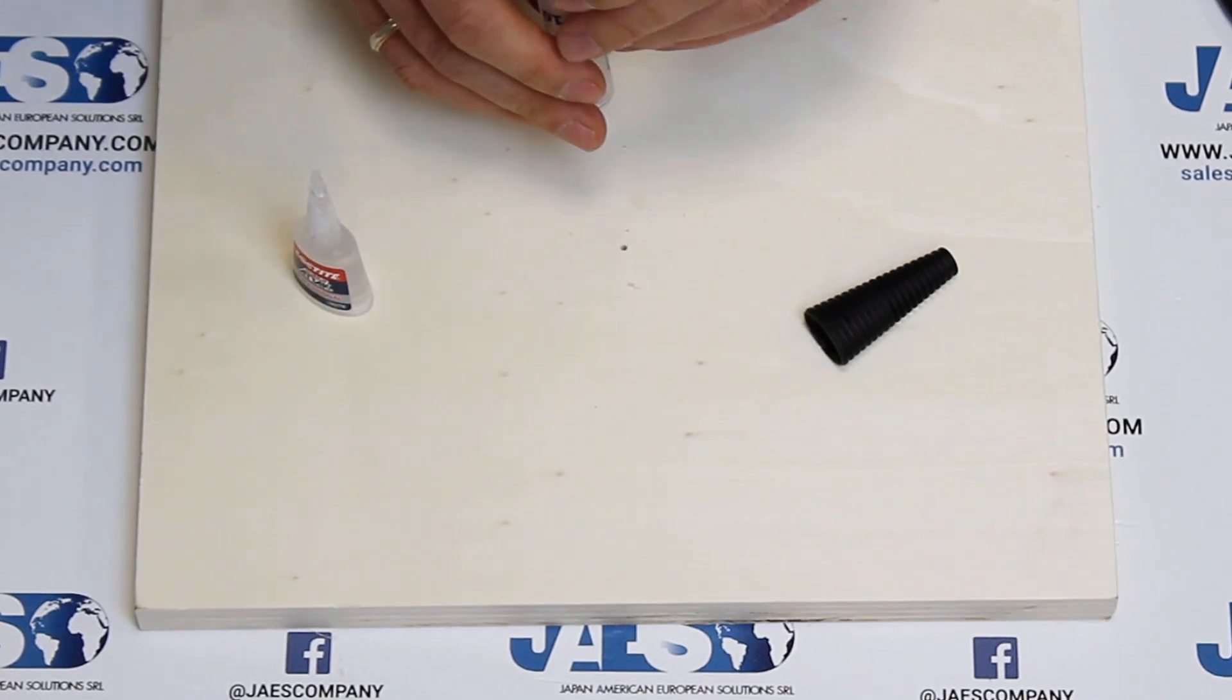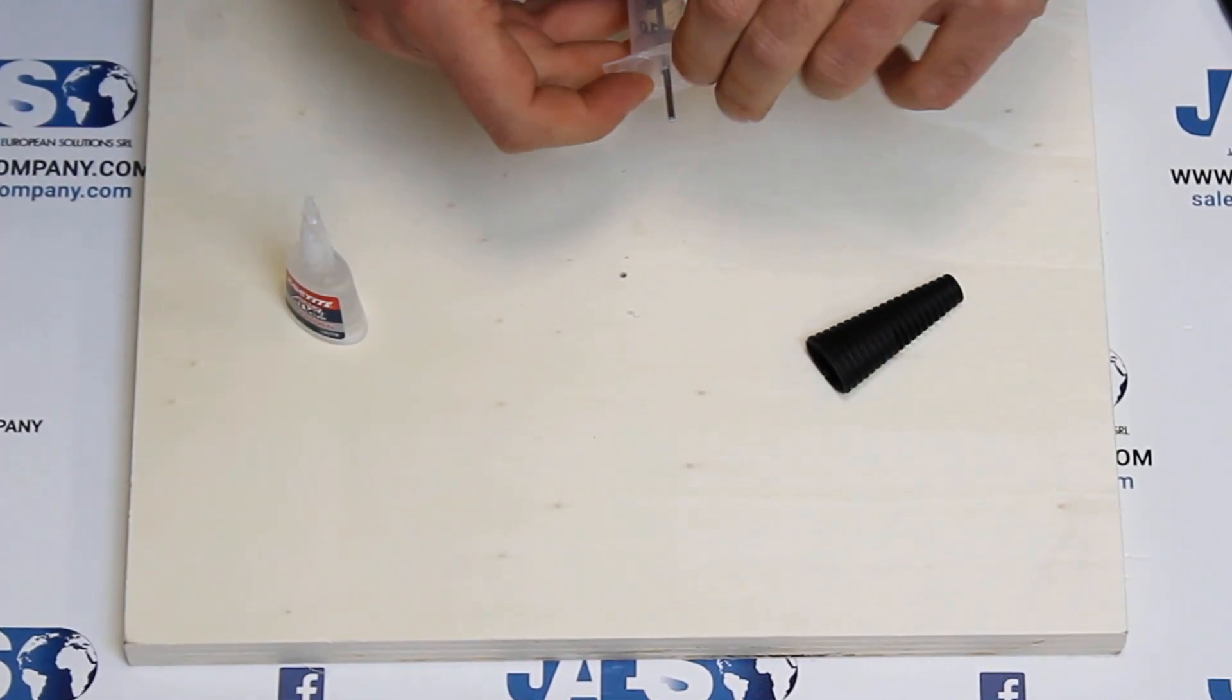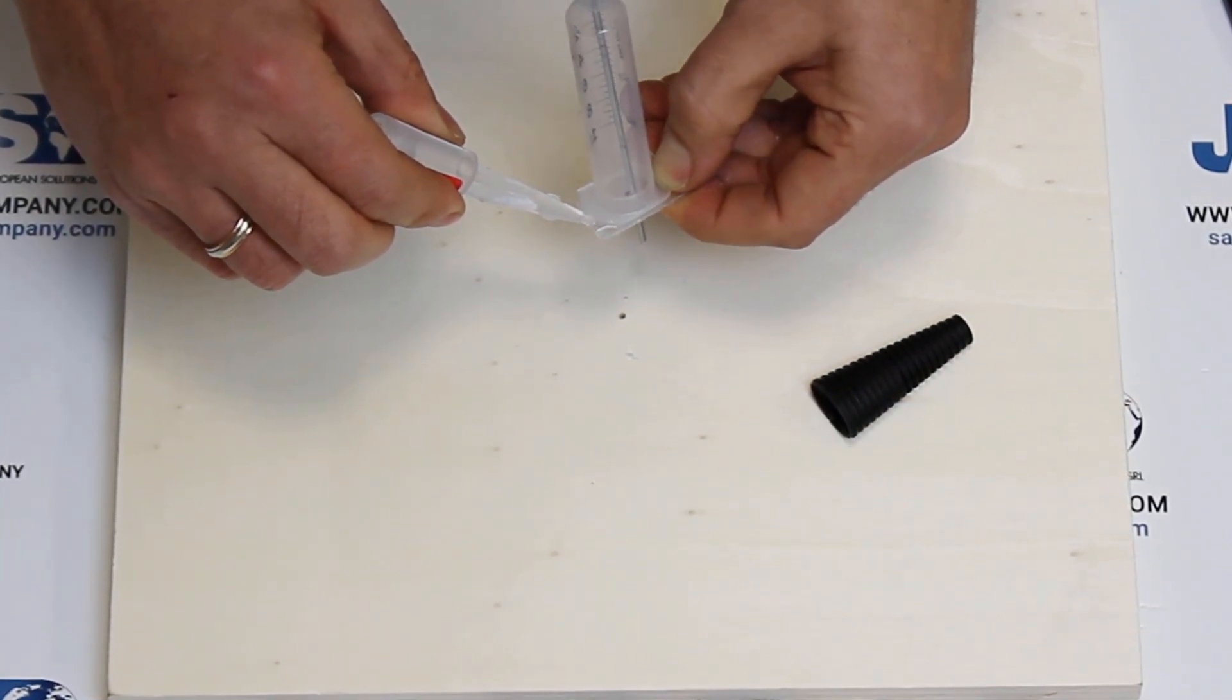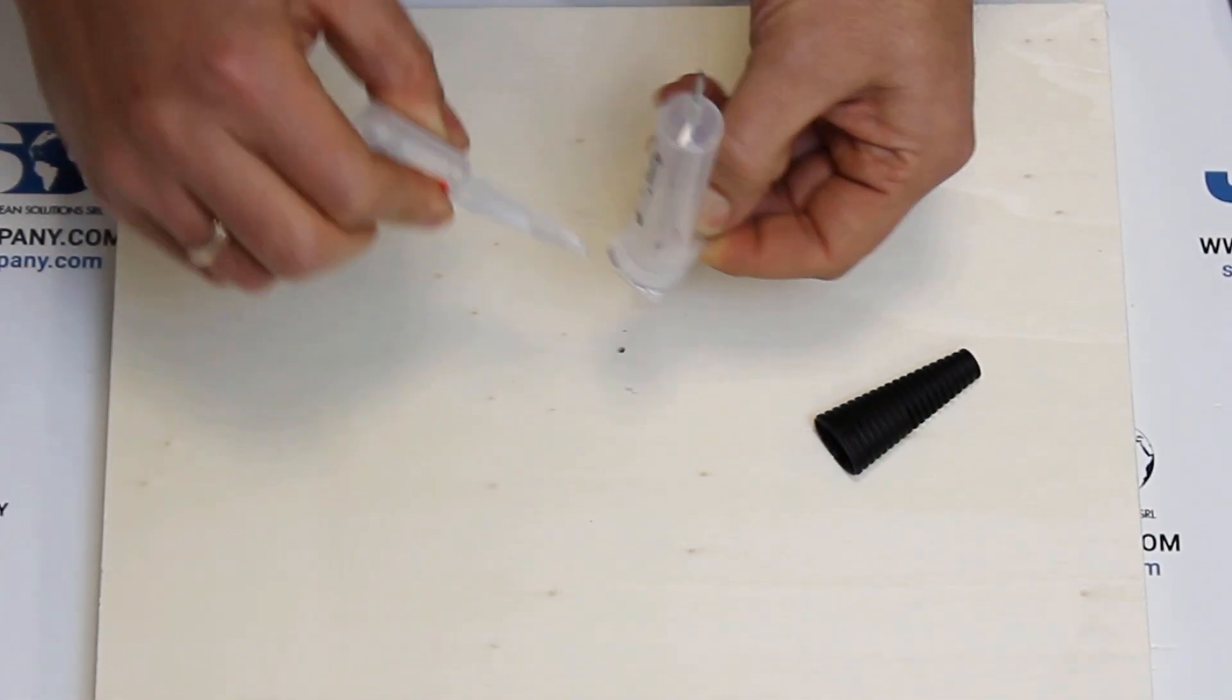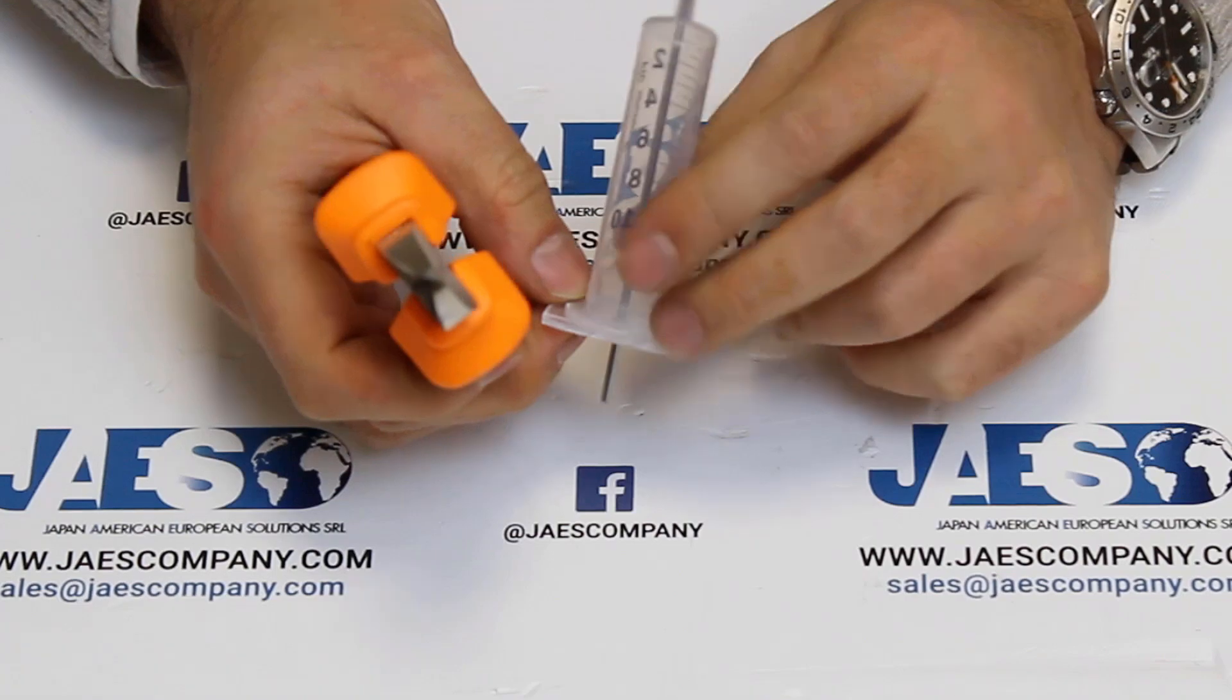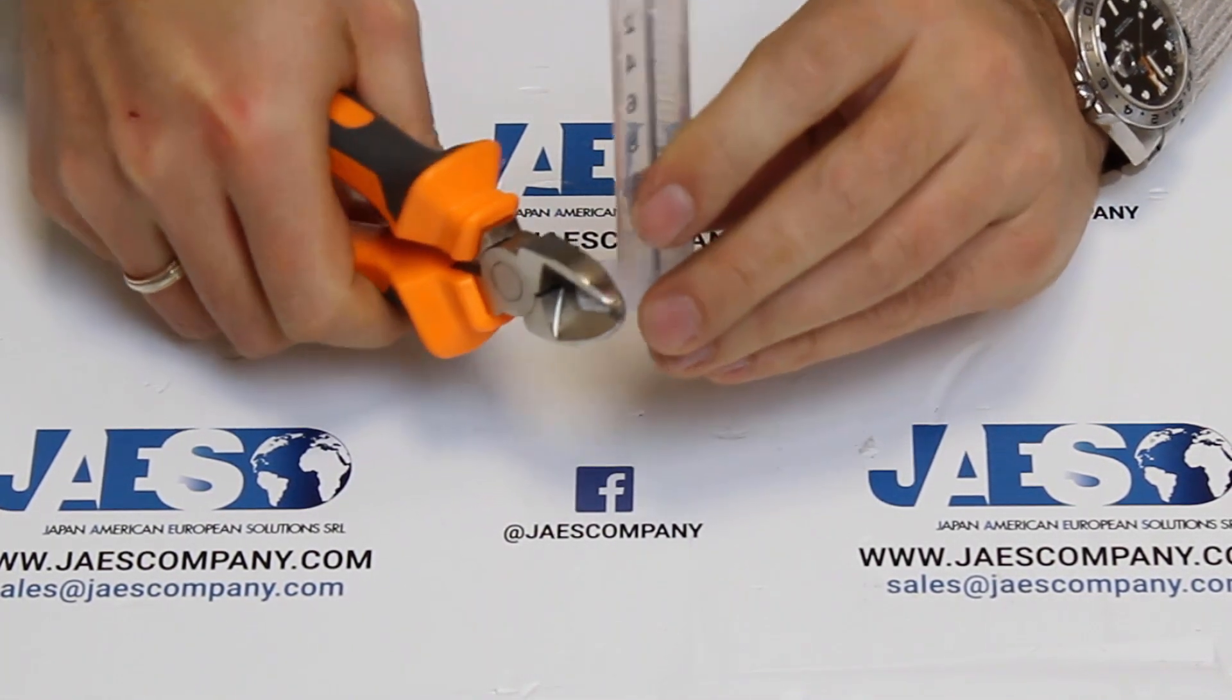Now we can glue our piece of plastic on the syringe. Our hole must be perfectly centered. When the glue is dry, we can remove the excess plastic in this way.